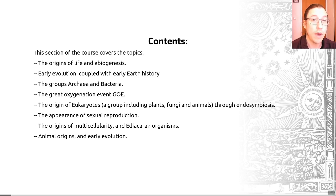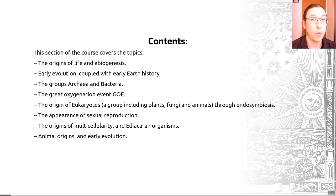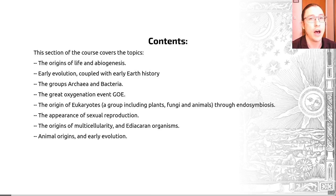Throughout these slides I've used some shorthand for ages before present. GA stands for billions of years before present, so 1.5 GA means 1,500 million years before the current day. MA means millions of years before present, so for example 540 MA means 540 million years ago.